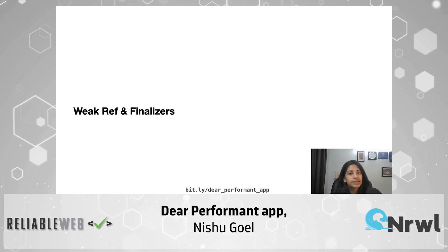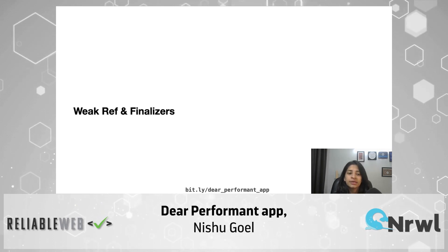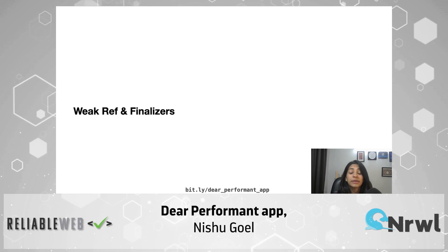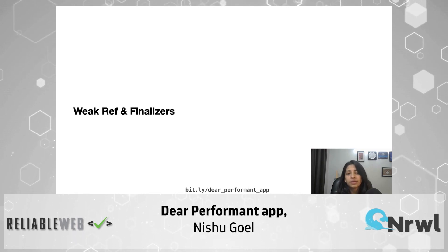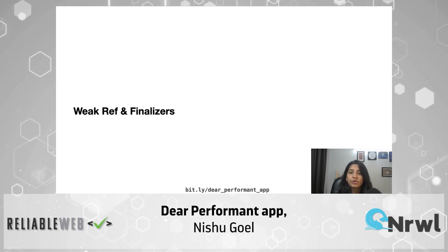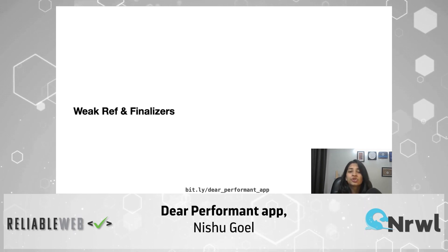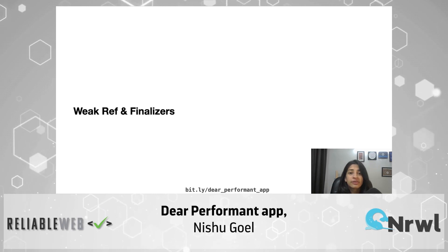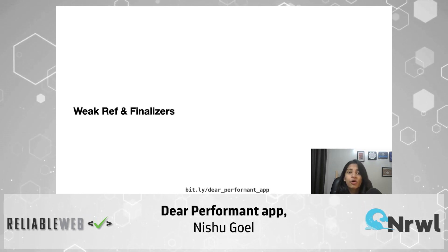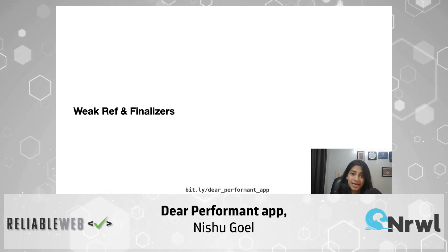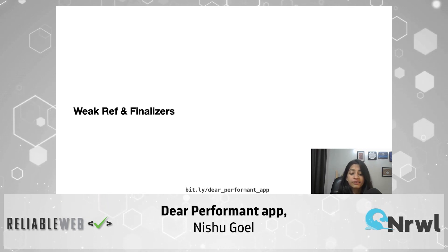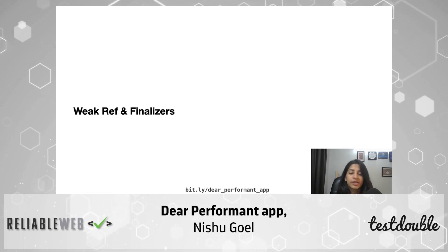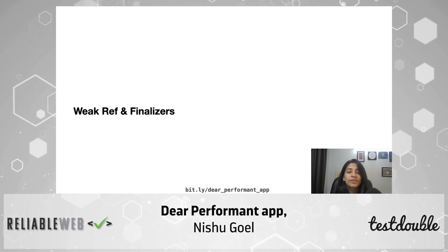Now let's talk about weak refs and finalizers. This is a recent addition to JavaScript. Think of a scenario where you want an object reference to be there inside the application, but you don't want to keep it in memory — you don't want memory to be bloated. That's what a weak reference is: a reference to an object that the garbage collector can wipe out. Finalizers help you in the development process — they tell you if the garbage collector has actually wiped out that reference. They provide logging information, not for production, but to make your life as a developer easier.